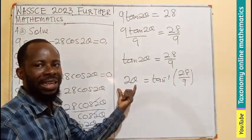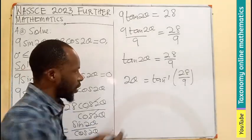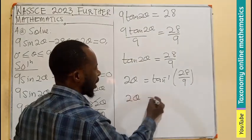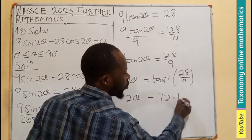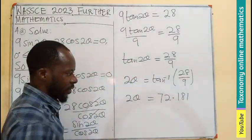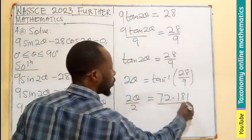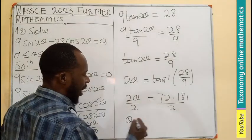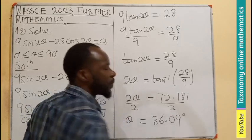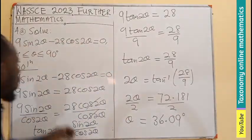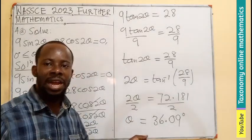So we need to get the value that this will give us on a calculator. Then since we are looking for only theta, we divide by the coefficient which is 2. So this becomes 2 theta equals to... the tan inverse of this will give us 72.181. Now we need to divide by the 2. Your theta will be equal to 36.09 degrees. So the value of theta, which is ranging from 0 to 90 degrees, is 36.09 degrees.